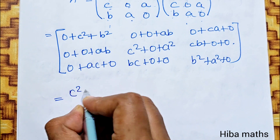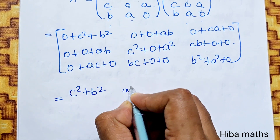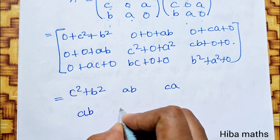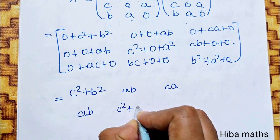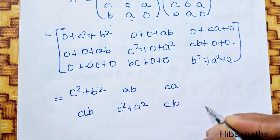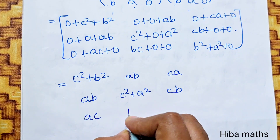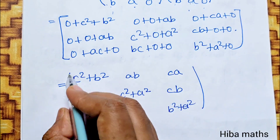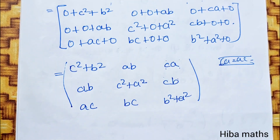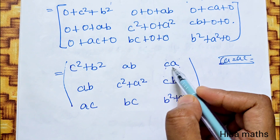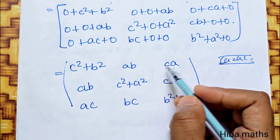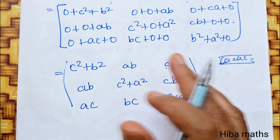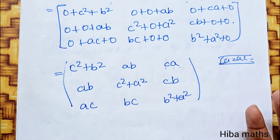1st row: C squared plus B squared, A, B, C, A, 0. AB, C squared, A squared. C, B, A, C, B, C. B squared plus A squared. So this is our answer. In the book there is C, A, A, C and A, A, C. It is the multiplication of A squared plus B squared.